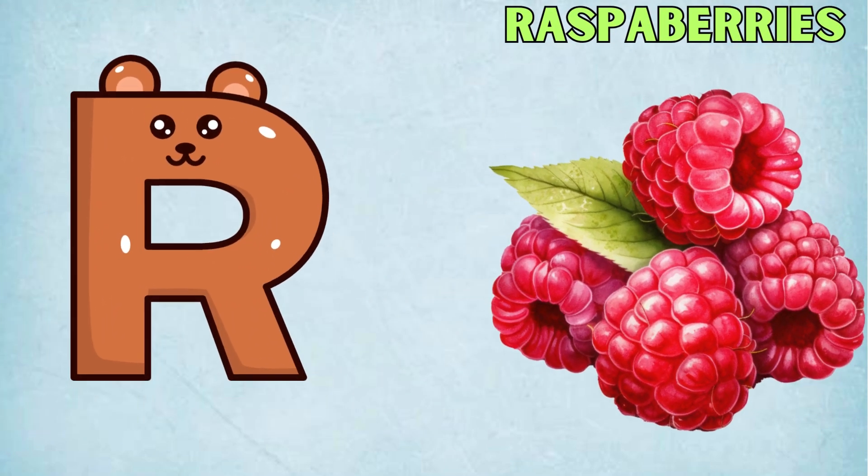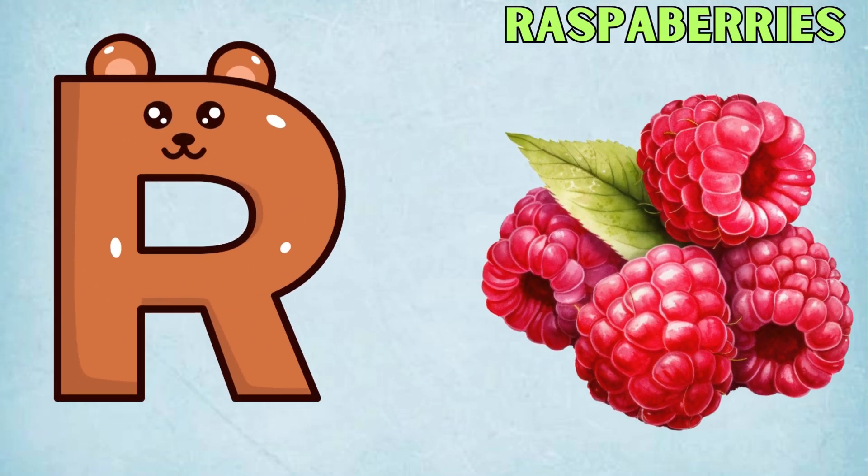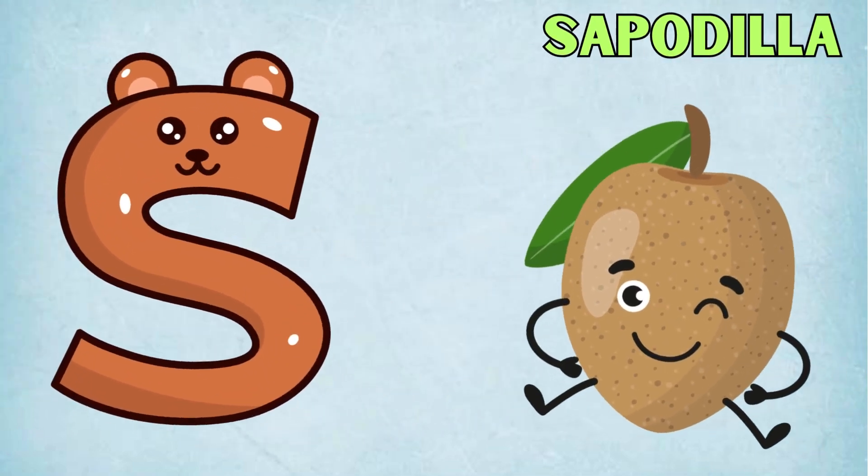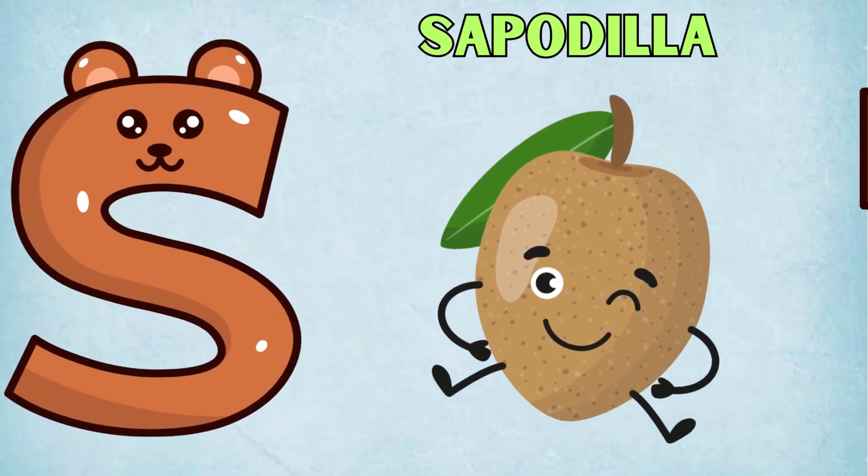R is for Raspberries, R, R, Raspberries. S is for Sapodilla, S, S, Sapodilla.